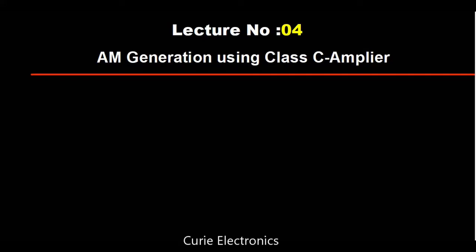There are different methods to generate amplitude modulated waves. Today we are going to see AM generation using class C amplifier. Before that, let us see what are the ways to generally generate AM.